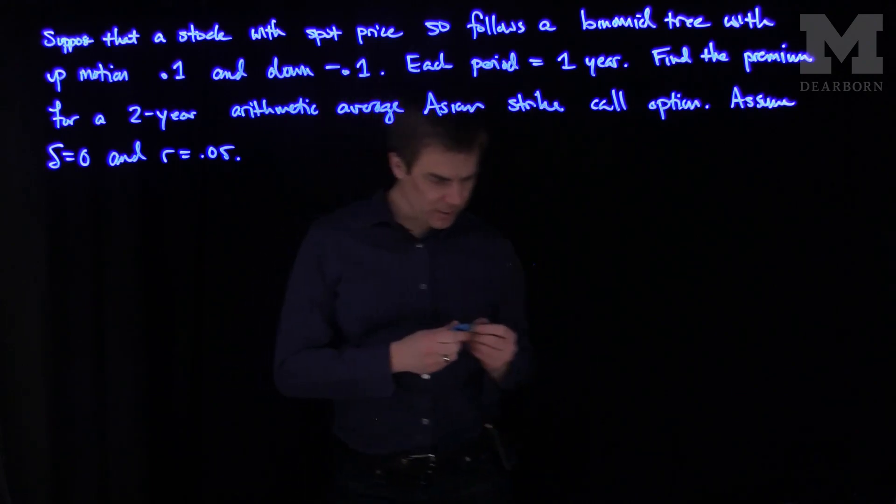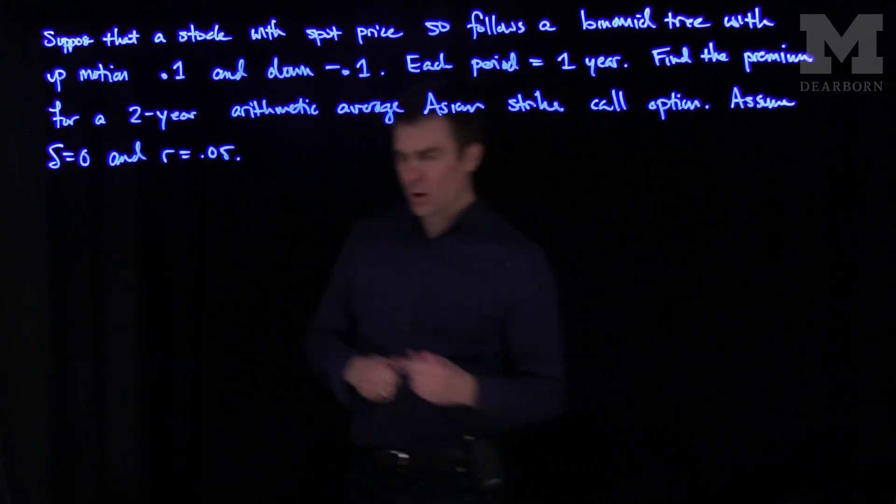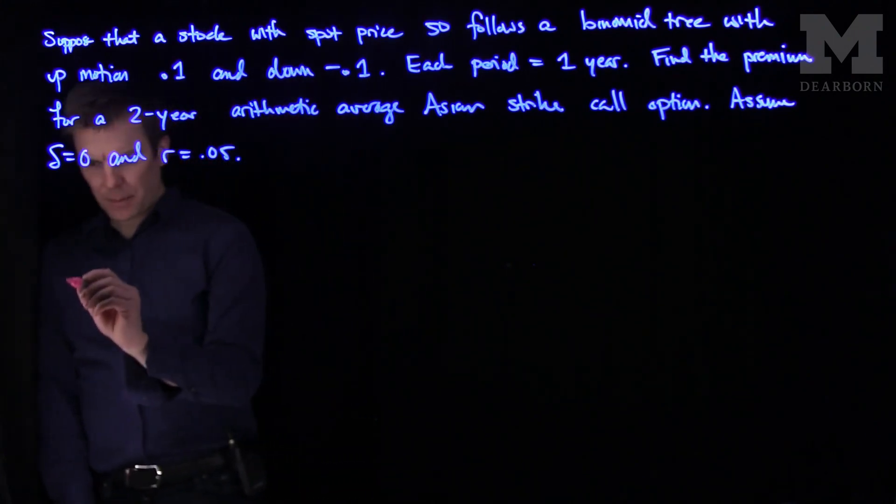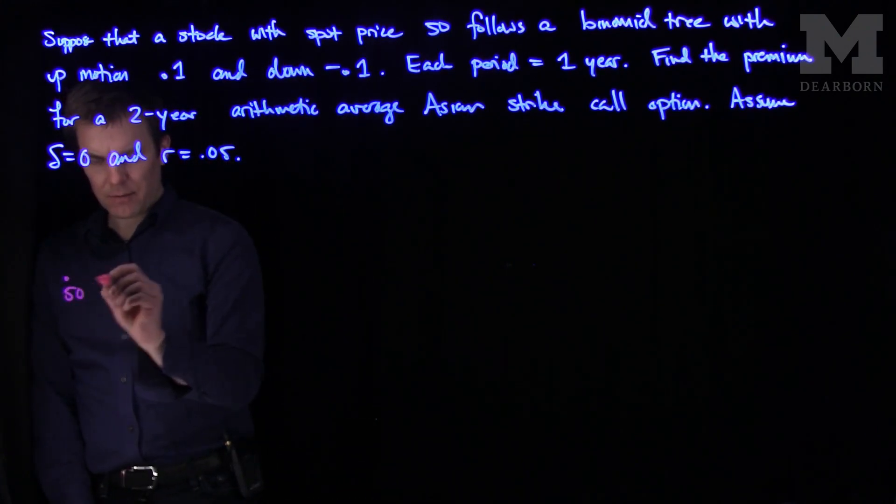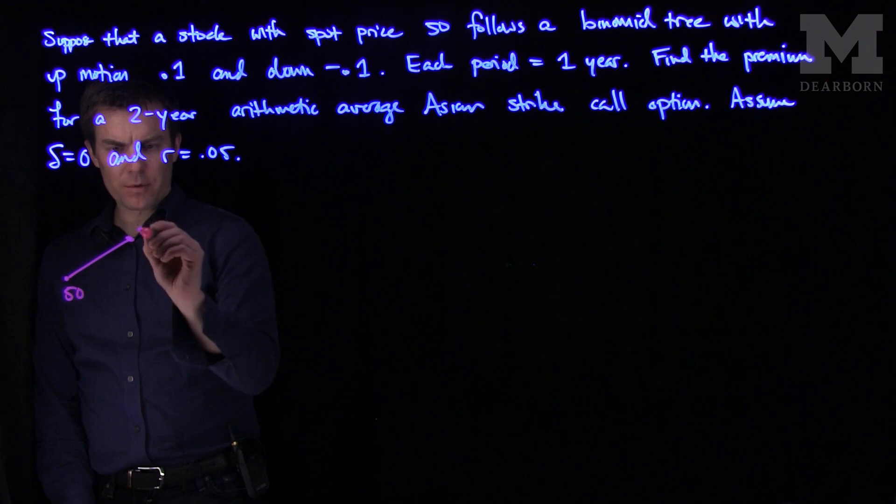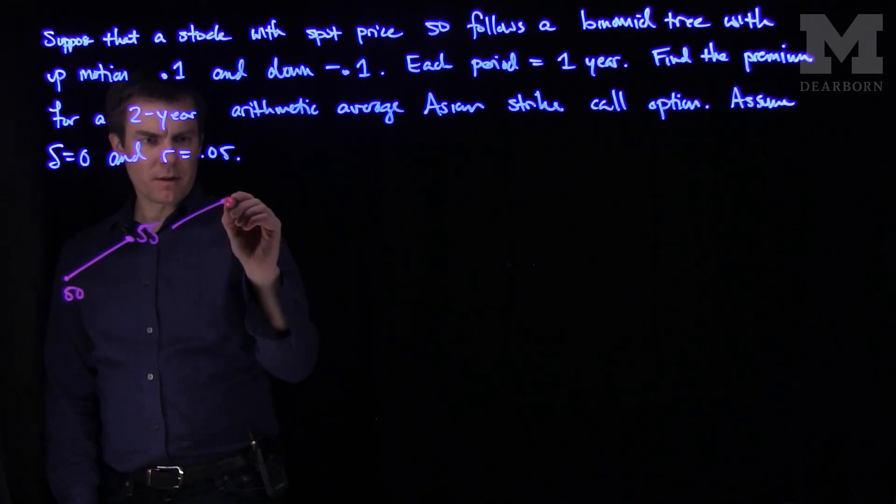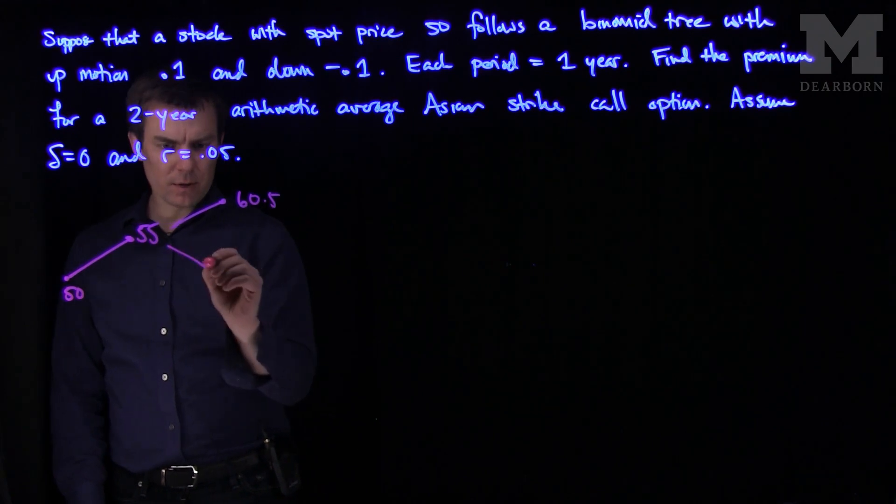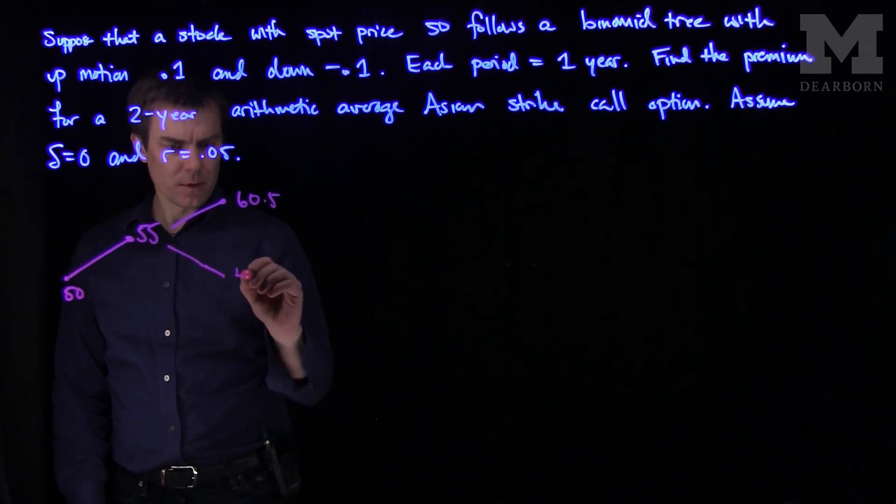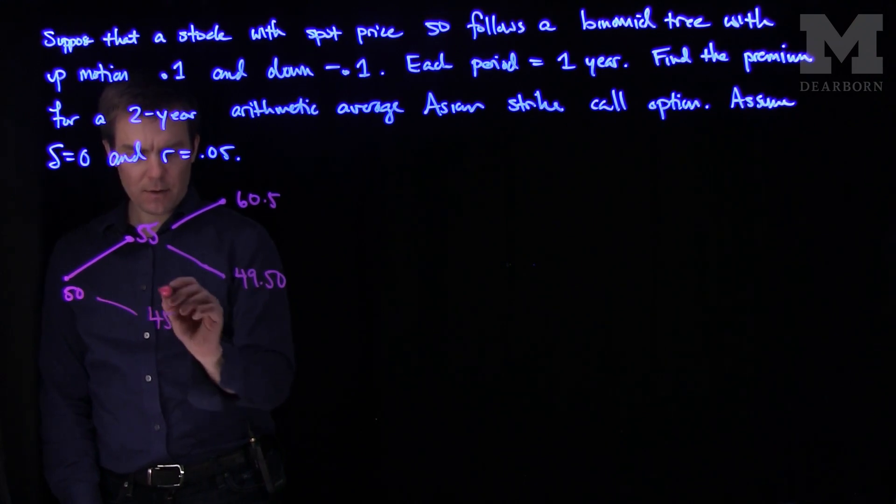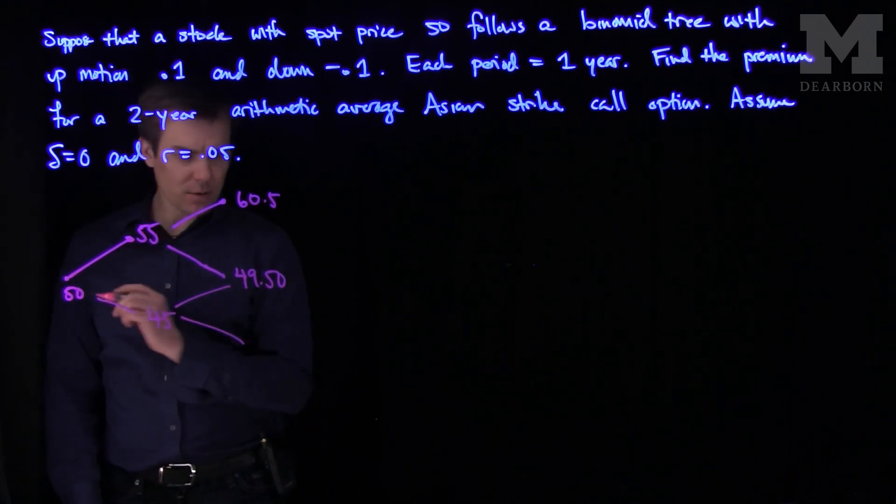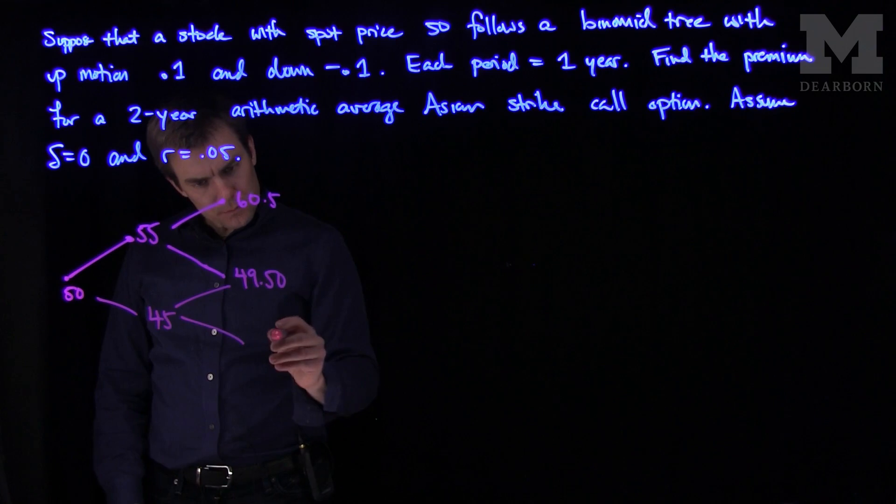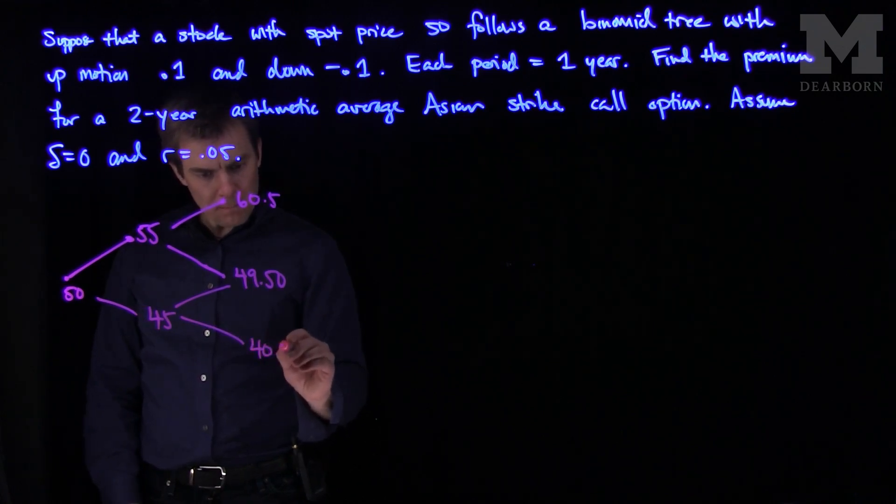So what we'll do is we'll write down our tree. We're going to go up by 10% or down by 10%. So here is 50, and then 50 will go up to 55, and 55 will go up to 60.5. Go down over here to 49.5. This goes down to 45. This goes up and then this goes down over here, and each of these periods is a year. And this goes down to 40.5.